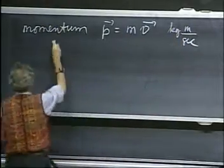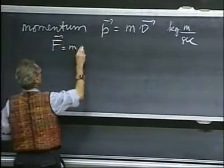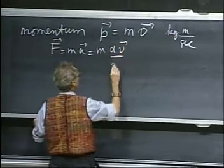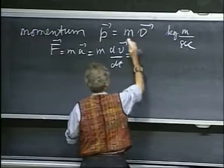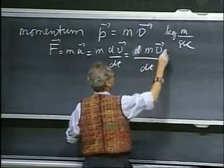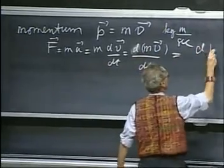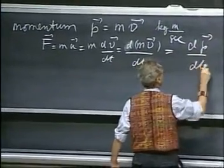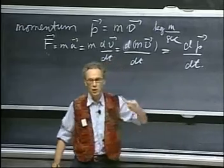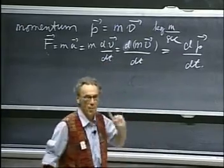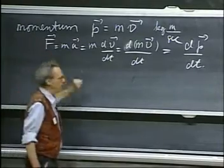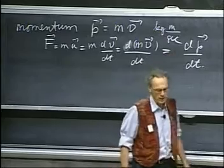F equals ma. That equals m dv dt. That equals dmv dt. And that equals, therefore, dp dt. So what you see, the force is dp dt. And what that means is if a particle changes its momentum, a force must have acted upon it. It also means if a force acts on a particle, it will change its momentum.